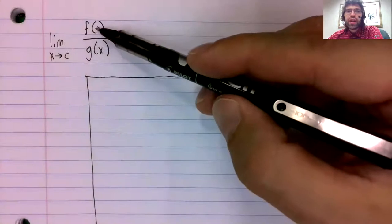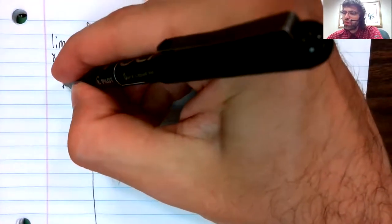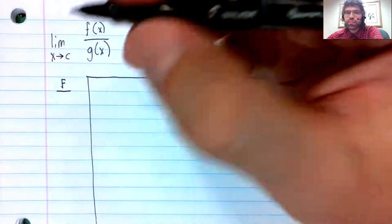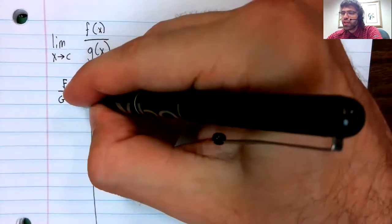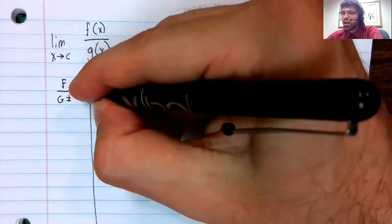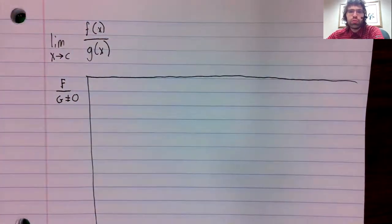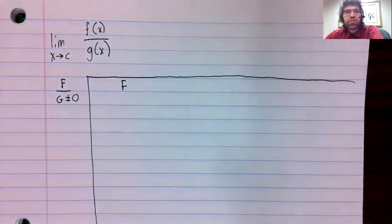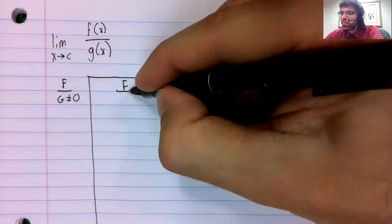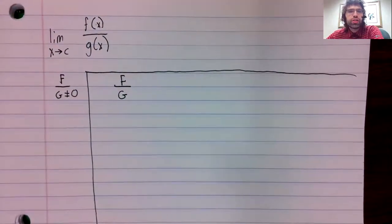First, if f approaches some finite number and g approaches a finite number that isn't zero, then we can just use our quotient rule. The limit is the limit of the numerator over the limit of the denominator.